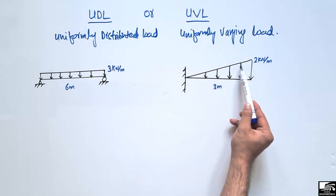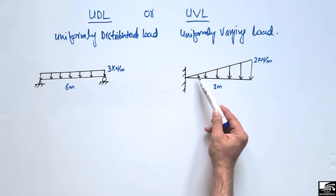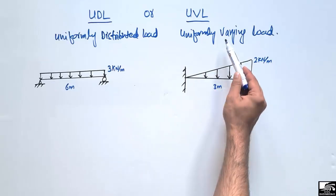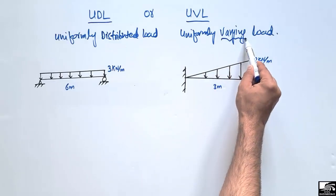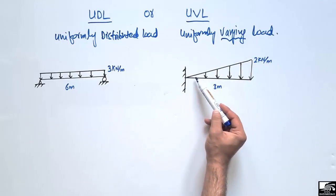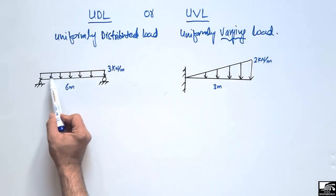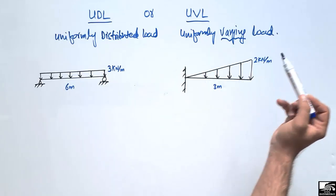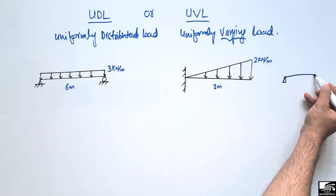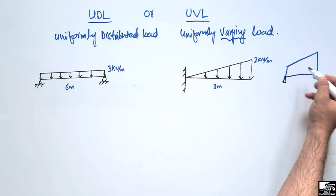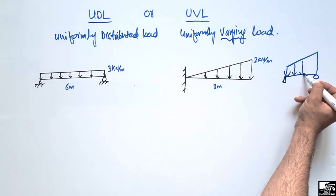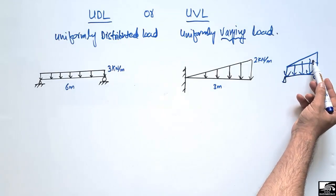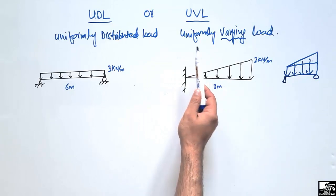A uniformly varying load means the load is not constant in magnitude but varies with distance. This is a triangular load, whereas a uniformly distributed load is a rectangular load. There can also be loads acting on a beam in a trapezoidal shape, which can be divided into a rectangle and a triangle.